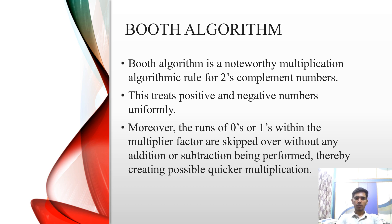Coming on to the Booth algorithm. Booth algorithm is a noteworthy multiplication algorithm. It is used for two complete numbers. This algorithm treats positive and negative numbers uniformly. Moreover, the runs of zeros or ones within the multiplier factor are skipped over without any addition or subtraction being performed, thereby creating possible and quicker multiplication.